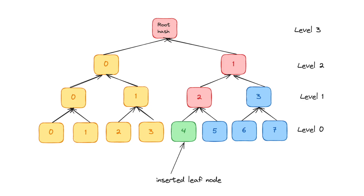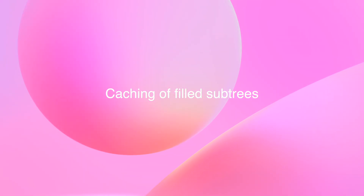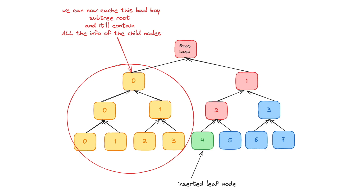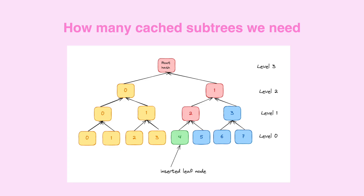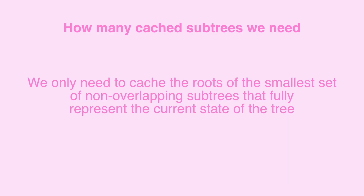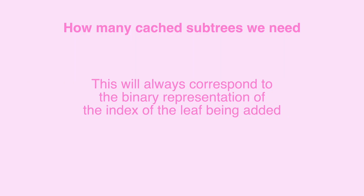Once we fill an entire subtree, we cache its value in the smart contract to use later. By caching filled subtrees we reduce the number of calculations, since once a subtree has been populated it never needs to be recomputed. When adding a new leaf, we only need to store certain subtree roots — the minimal set needed to construct the overall root. We only recompute the path from the leaf to the root. This set always corresponds to the binary representation of the index of the leaf being inserted. For example, inserting leaf index 4 (binary: 100) requires caching one subtree of depth 2, zero subtrees of depth 1, and zero subtrees of depth 0.